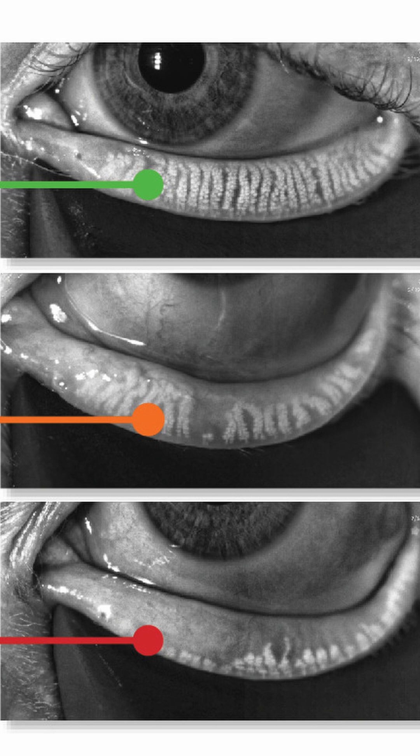By looking at the glands, we can see if they're plugged up, if they're dropping out — meaning disappearing — or if they're starting to show signs of stress. This one test, meibography, is probably the most important thing you can get to know what treatments will be most effective for your dry eye. So if you're getting your eyes evaluated for dry eye, make sure you get meibography done on your eyelids.